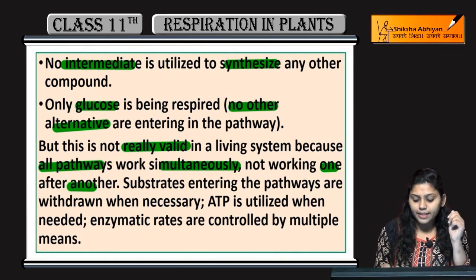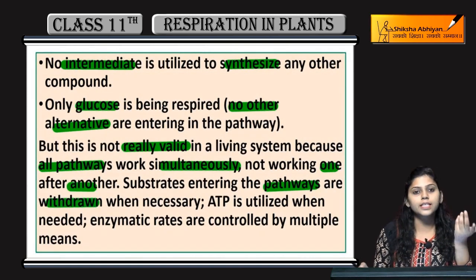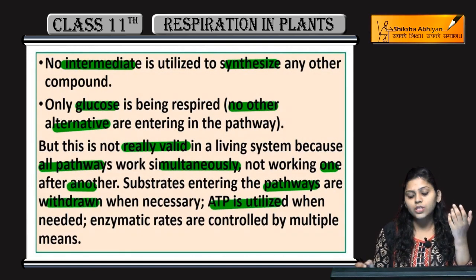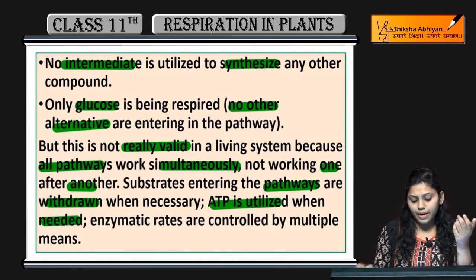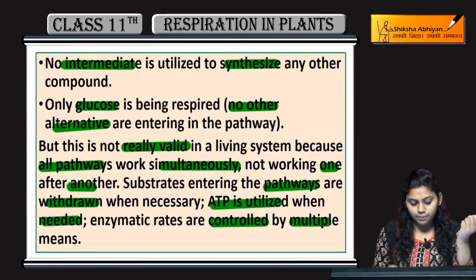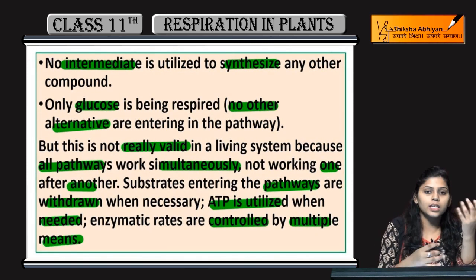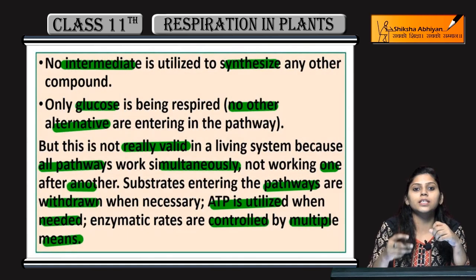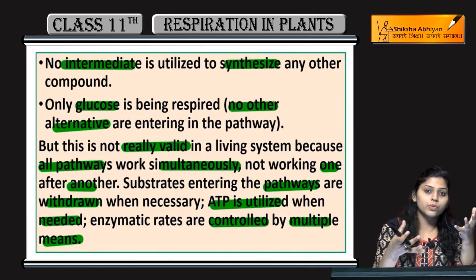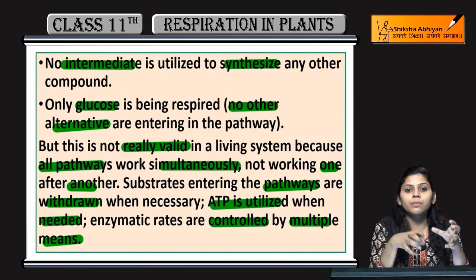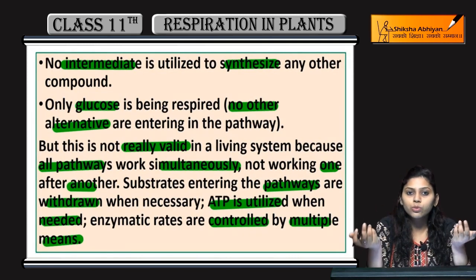Substrate jo enter karta hai pathways mein, they are withdrawn when necessary. ATP is utilized when needed. Enzymatic rates are controlled by multiple means — jo bhi enzymatic rate hain, woh bahut saare alag-alag means se control kiye jaate hain. Substrate bhi jo bante hain, ya jo product bante hain, woh doosre reaction mein as a substrate use hote hain.